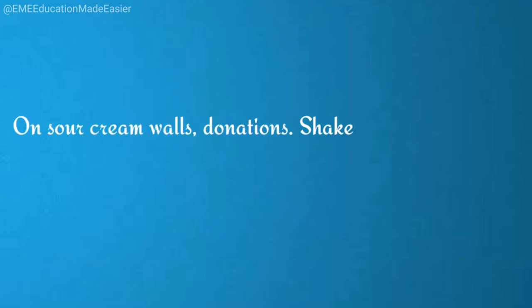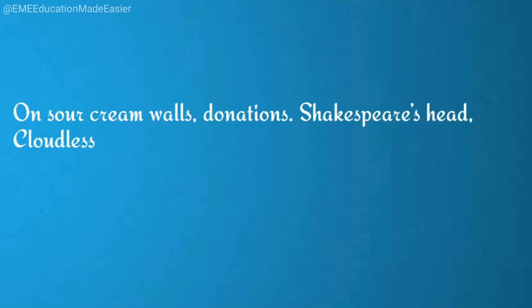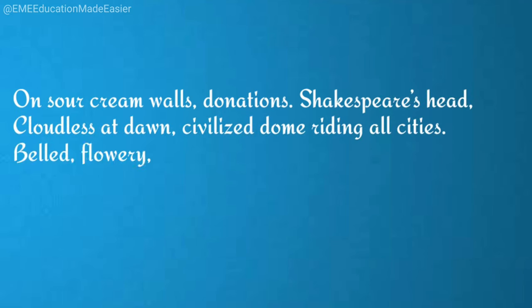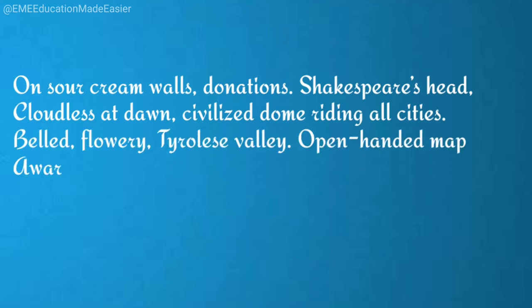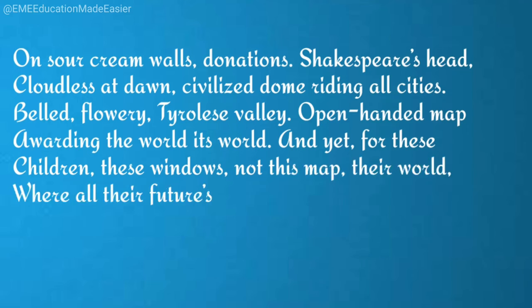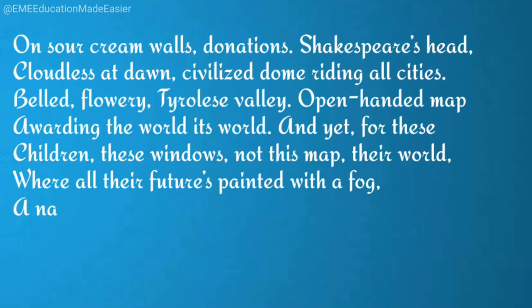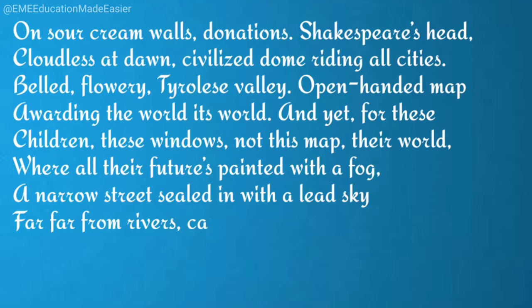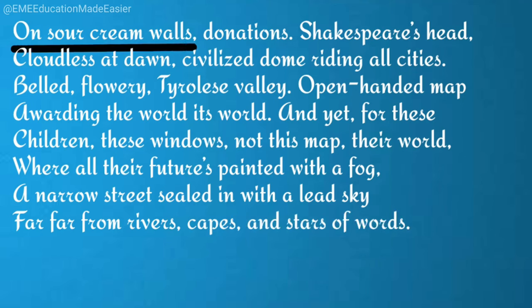Stanza two: 'On sour cream walls, donations, Shakespeare's head, cloudless at dawn, civilized dome riding all city, belled flowery Tyroli's belly, open-handed map awarding the world its word. And yet for these children, these windows, not this map, their world. Where all their futures painted with a fog, a narrow street sealed in with a lead sky. Far, far from rivers, capes and stars of words.'